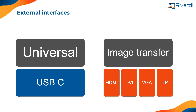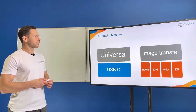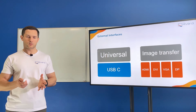We can jump into the external interfaces. We had many internal interfaces — some of them were universal like SPI, I2C, UART, and image transfer interfaces; very fast interfaces like LVDS, RGB (parallel), MIPI, and eDP (Embedded DisplayPort). And here we have external ones — the ones that we usually have access to.